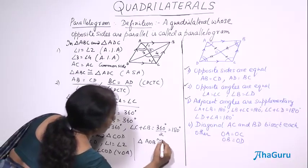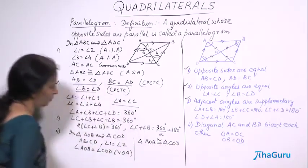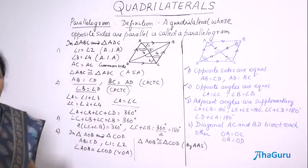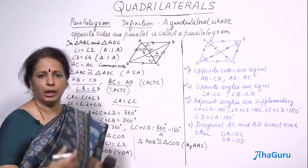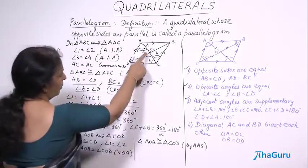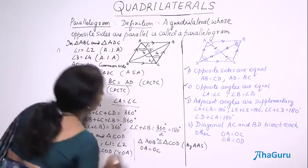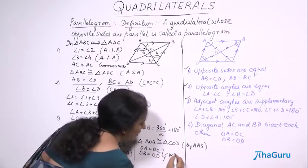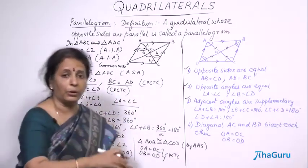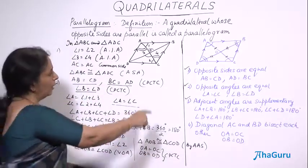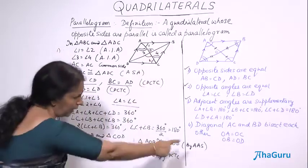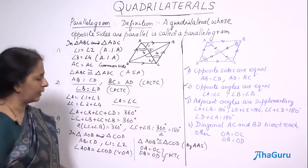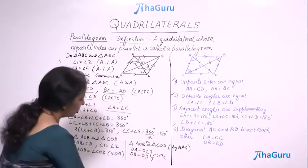Now I have two angles and one side — the side is not included between the angles, so this is AAS, not ASA. Triangle AOB is congruent to triangle COD by AAS. The triangles are congruent. By CPCTC, the remaining elements are equal: OA equals OC and OB equals OD. The third remaining element — the angle at O — is also equal, but we do not need it here.